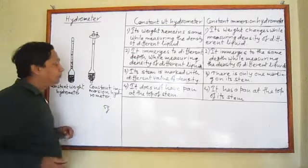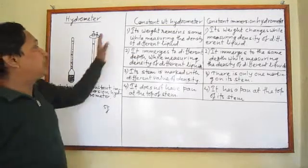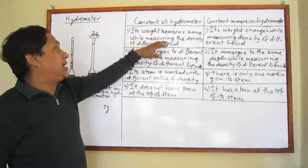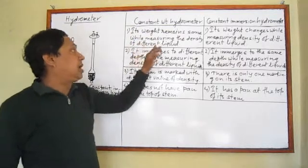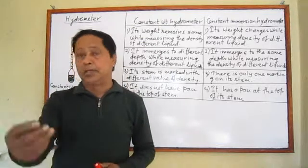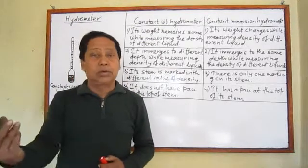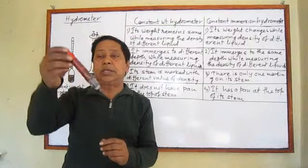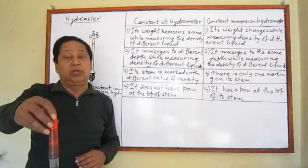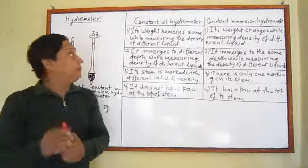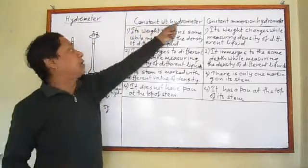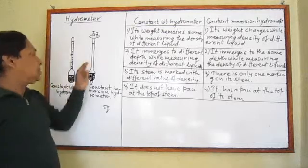Now, the basic differences between the two, point by point. First: in the constant weight hydrometer, its weight remains the same while measuring the density of different liquids — whether oil, water, salt solution, or sugar solution. You simply put the hydrometer into the liquid and it floats, but the weight doesn't change. That is why it is called the constant weight hydrometer.